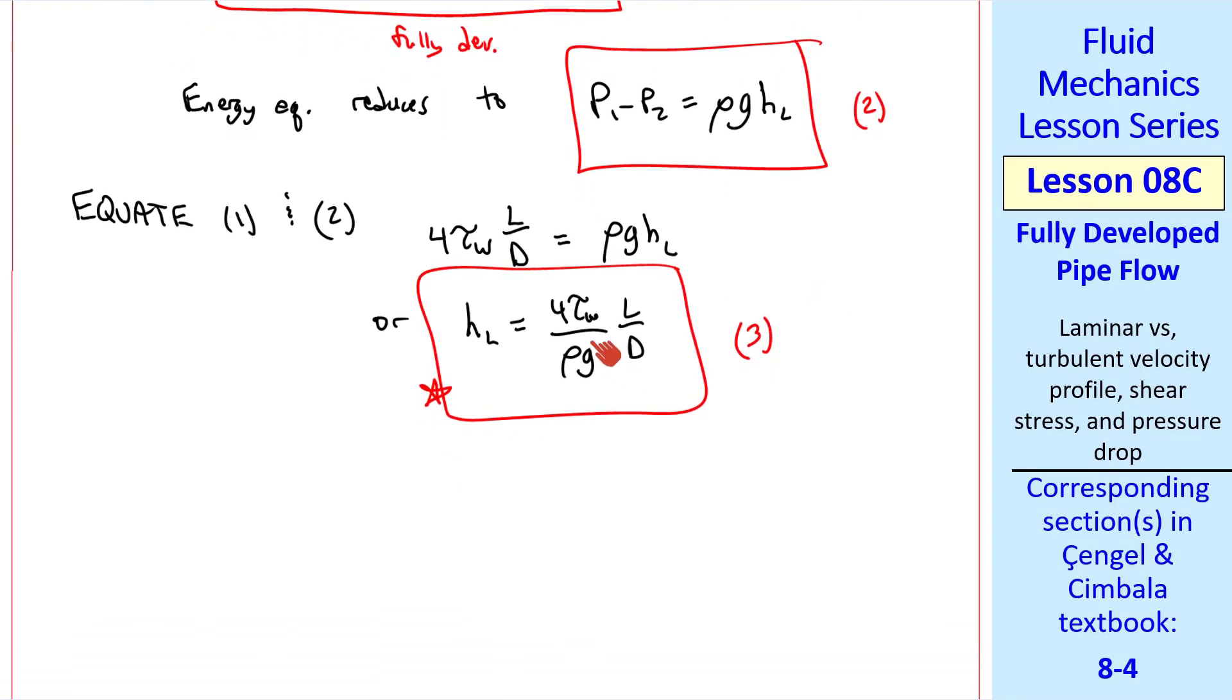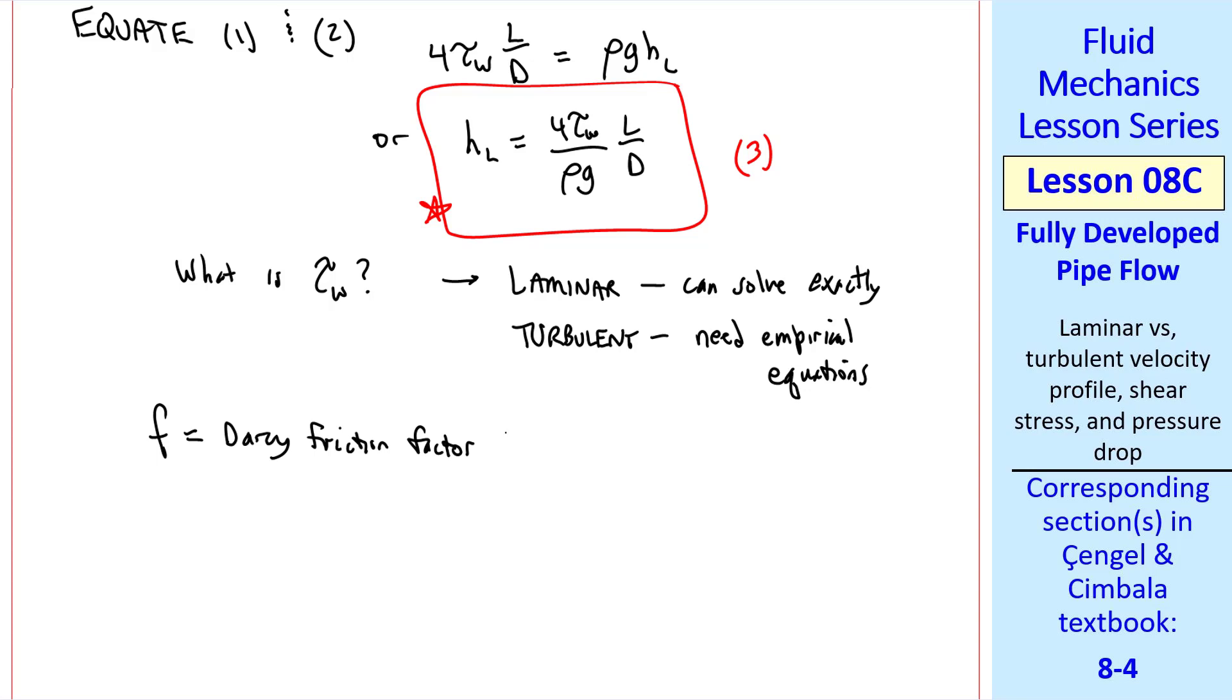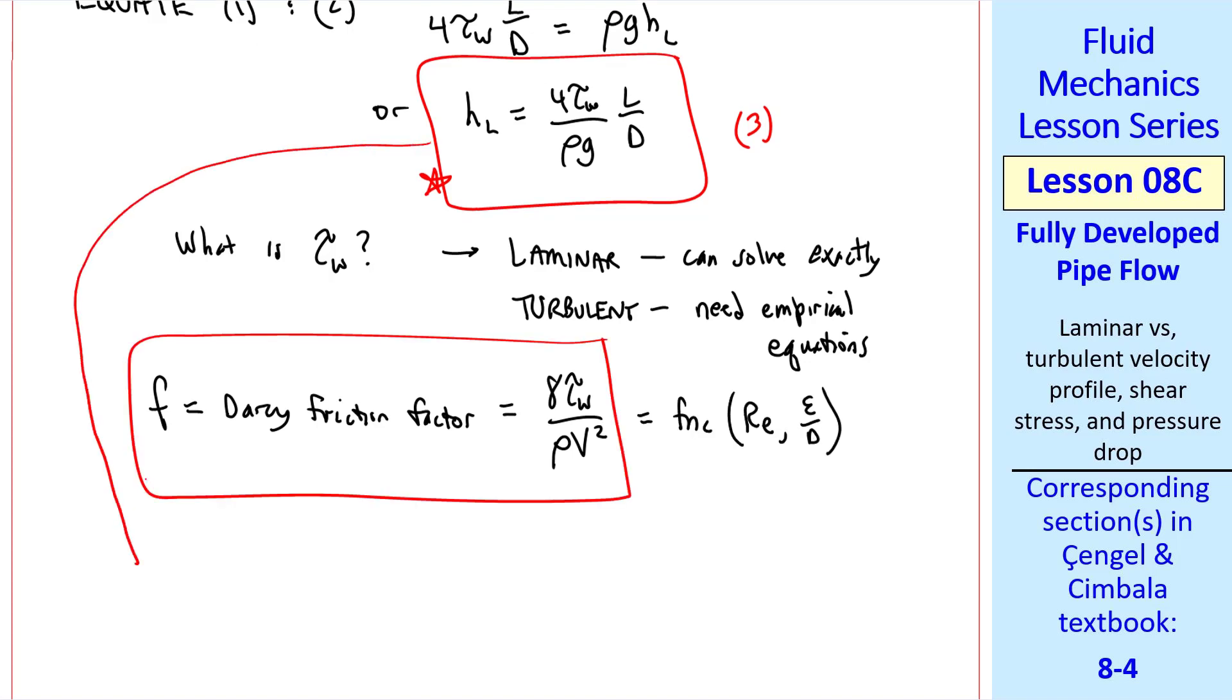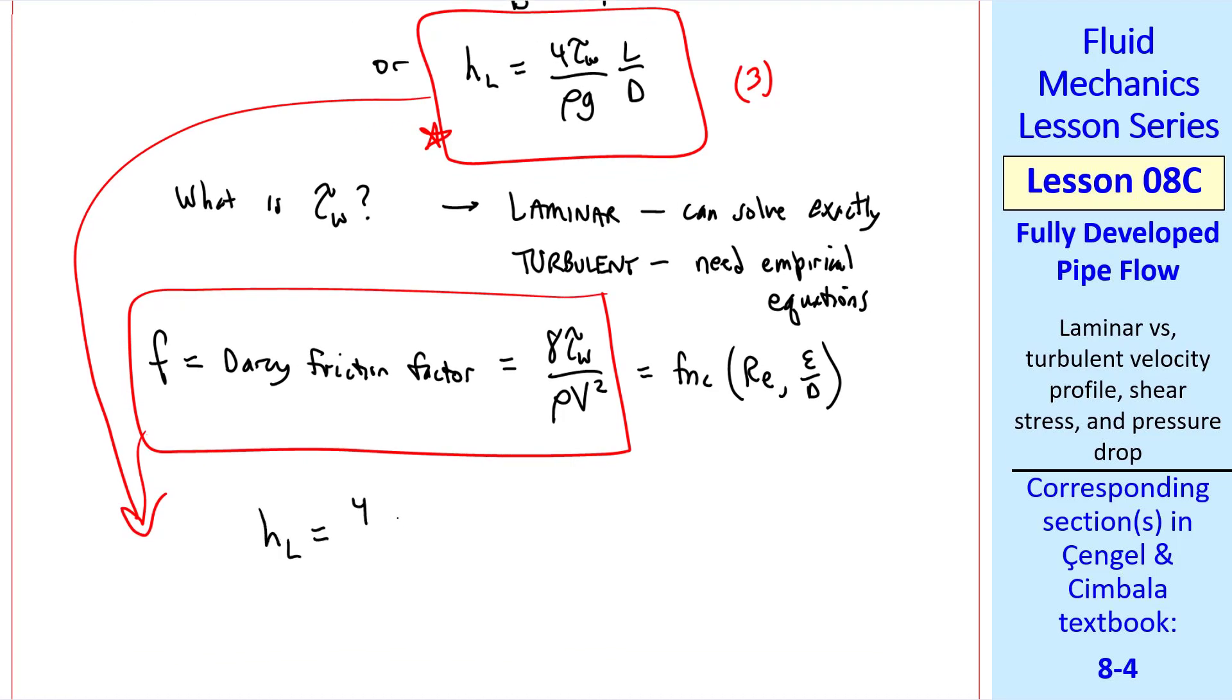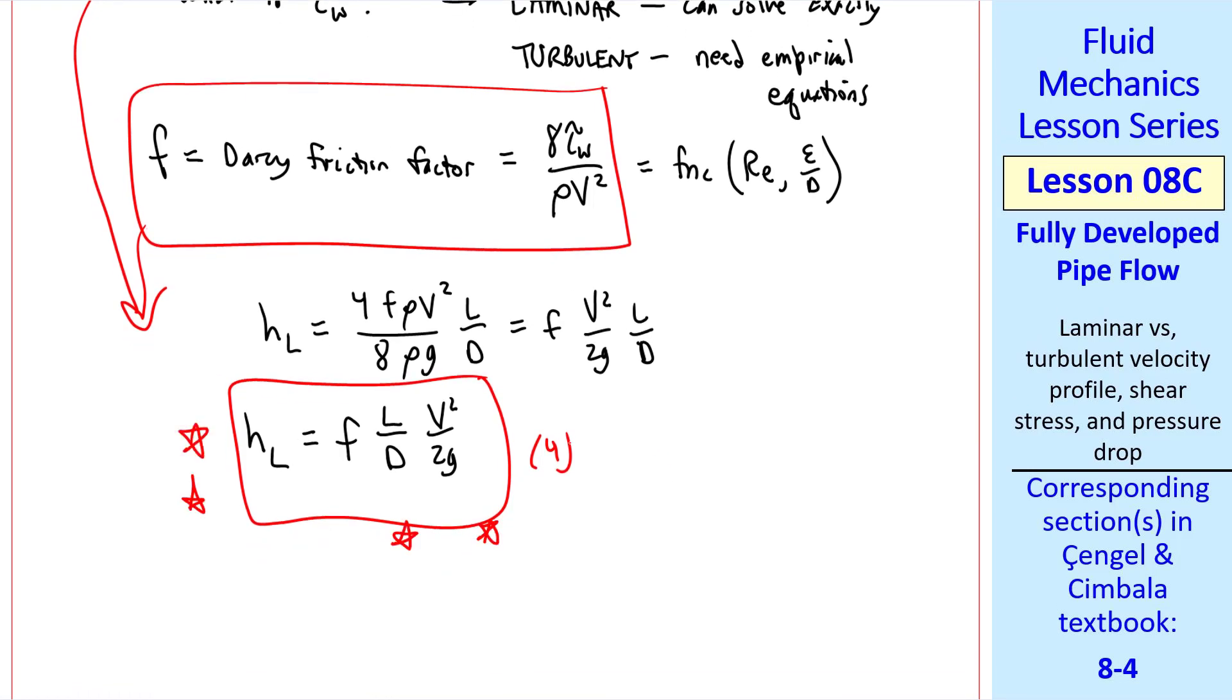We still can't use this equation because we don't know what tau w is. What is tau w? For laminar flow, we can solve for it exactly. For turbulent flow, we'll need some empirical equations. For either case, we previously performed a dimensional analysis. And we found that Darcy friction factor f, which is 8 tau w over rho v squared, is a function of Reynolds number and nondimensional roughness parameter. In terms of f, Darcy friction factor, equation 3 becomes hl equal 4 f rho v squared over 8 rho g l over d equal f v squared over 2g l over d. So we have another expression for hl, the irreversible head loss, namely f l over d, v squared over 2g. I'll call this equation 4, and this will be our workhorse equation for fully developed pipe flow.